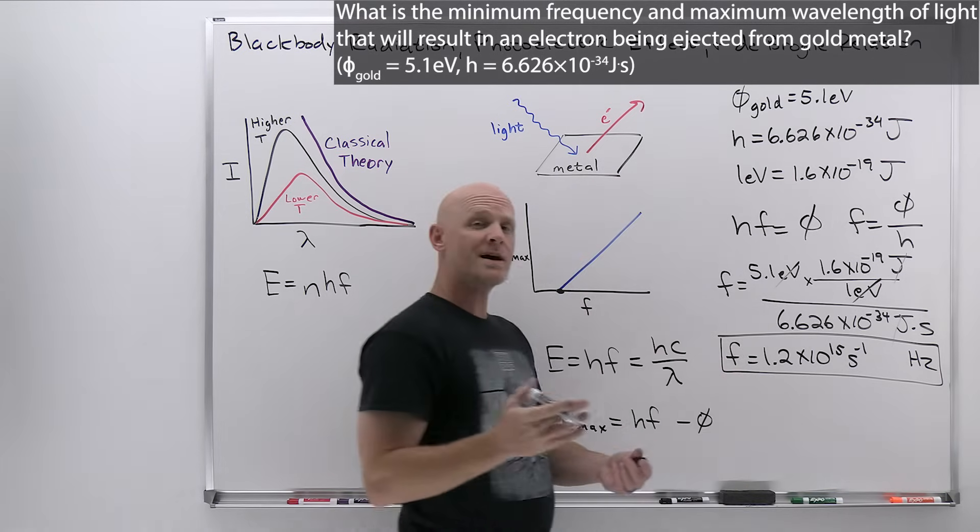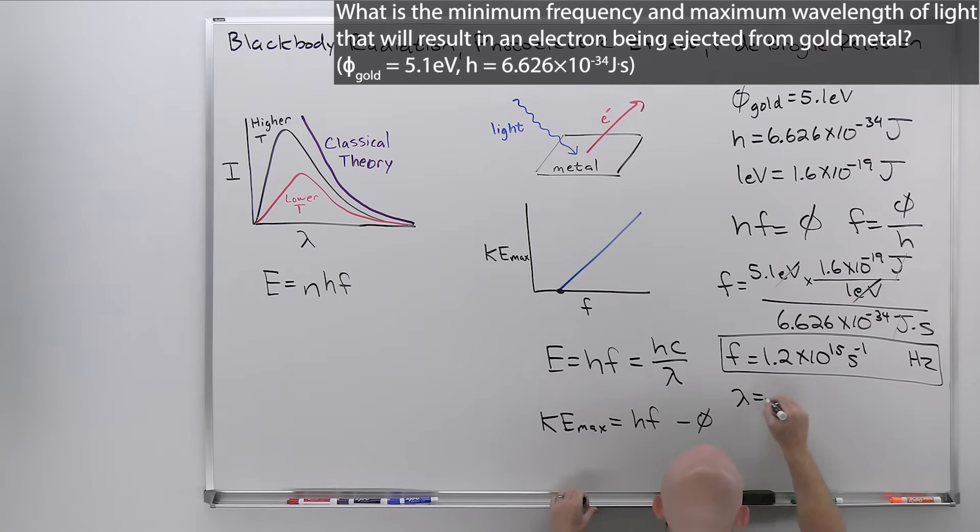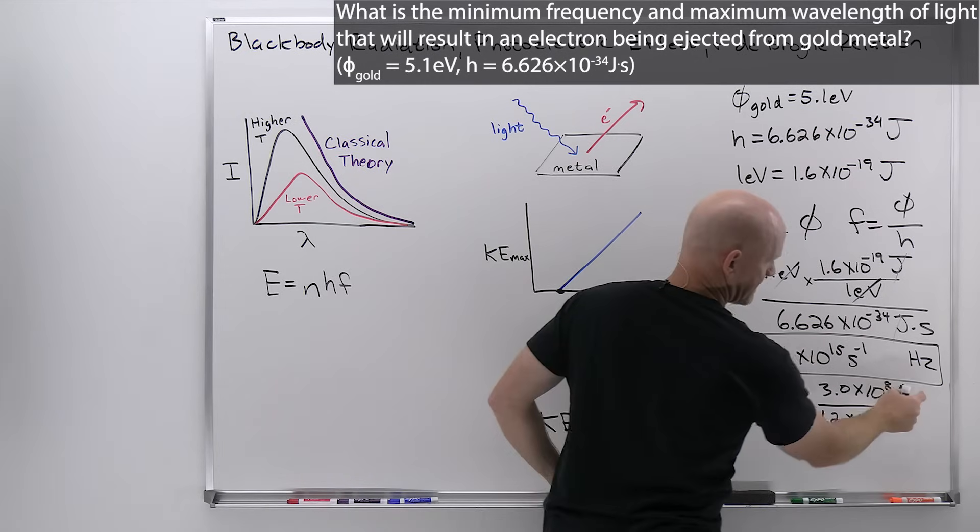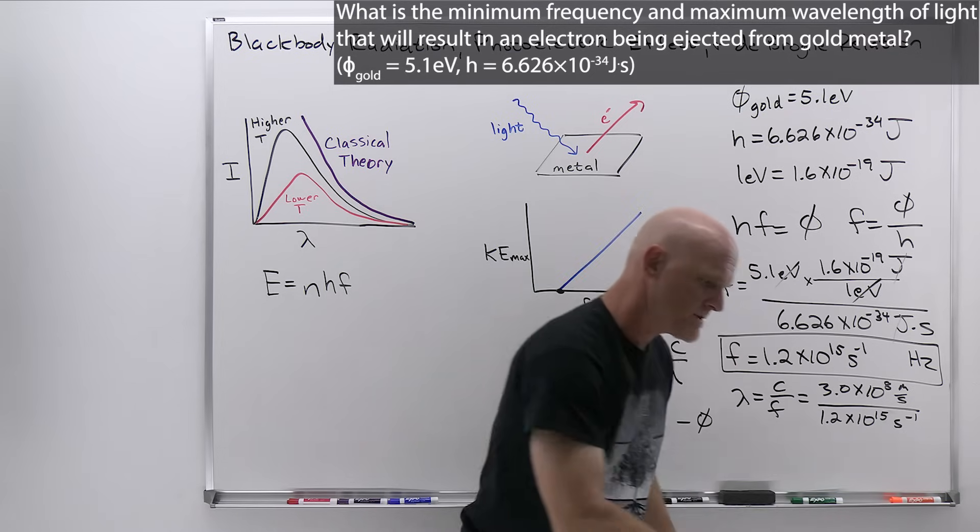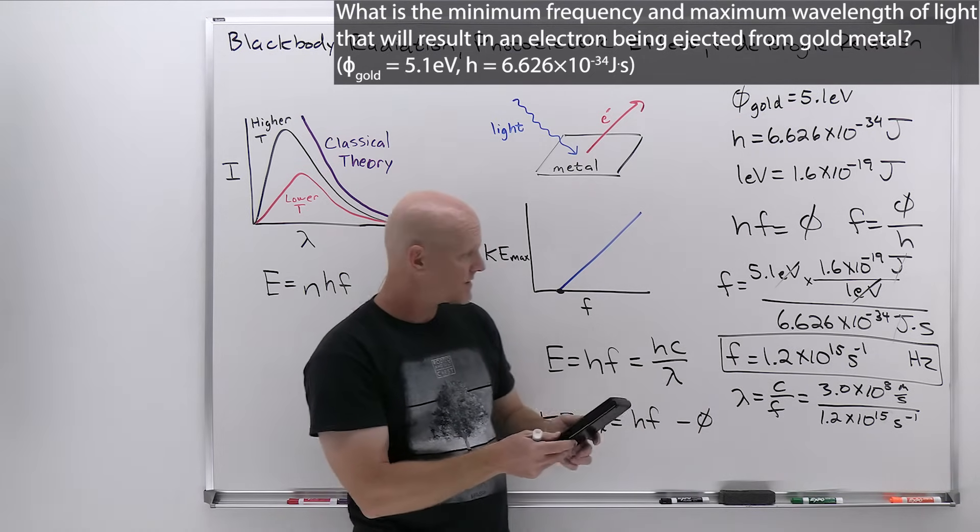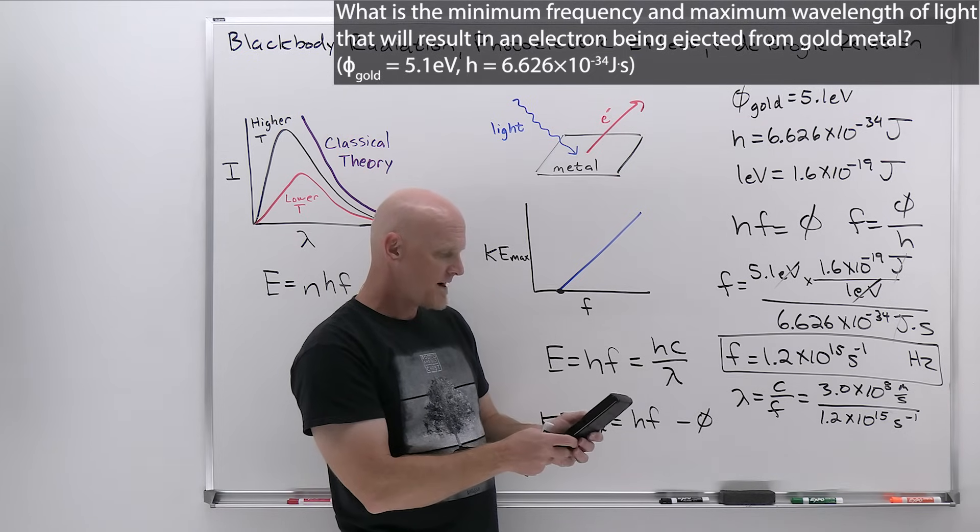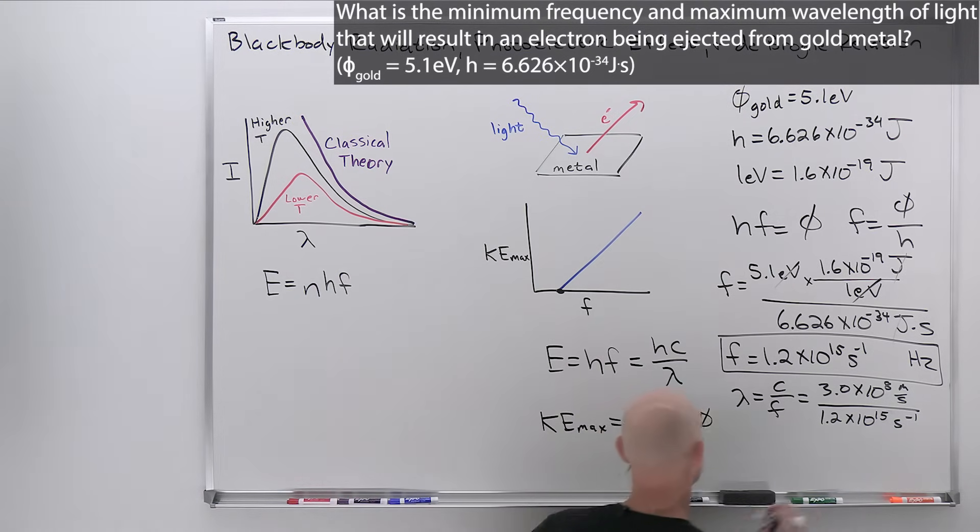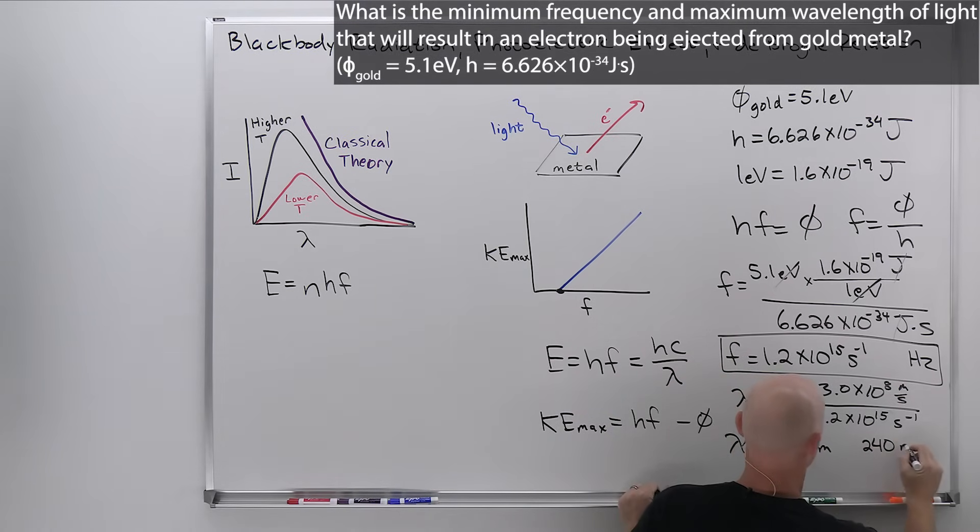And you might recall that frequency times wavelength equals the speed of light. So therefore, the wavelength would equal the speed of light over the frequency, which would be 3.0 times 10 to the eighth meters per second, all over this 1.2 times 10 to the 15th per second. The per seconds are going to cancel and the units are going to come out in meters. I'm going to use the entire answer that's in my calculator, we'll take 3 times 10 to the eighth divided by that last answer. And in this case, 2.436 times 10 to the minus seven. So to two sig figs, that'd be 2.4 times 10 to the negative seven meters, or you might see that also written as 240 nanometers.